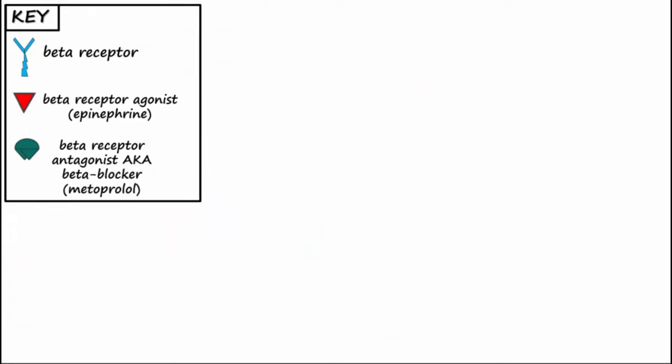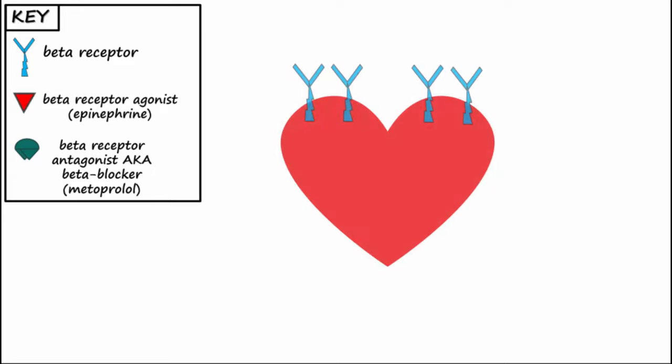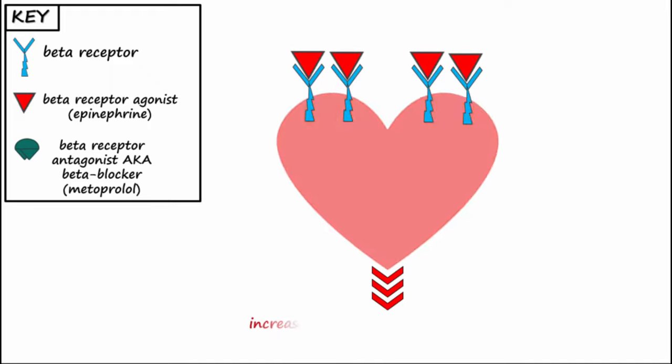Another example of the difference between agonist and antagonist drugs is epinephrine and beta blockers like metoprolol. Epinephrine is a beta receptor agonist and upon binding to and activating the beta receptors on the heart will increase heart rate and force of contraction.